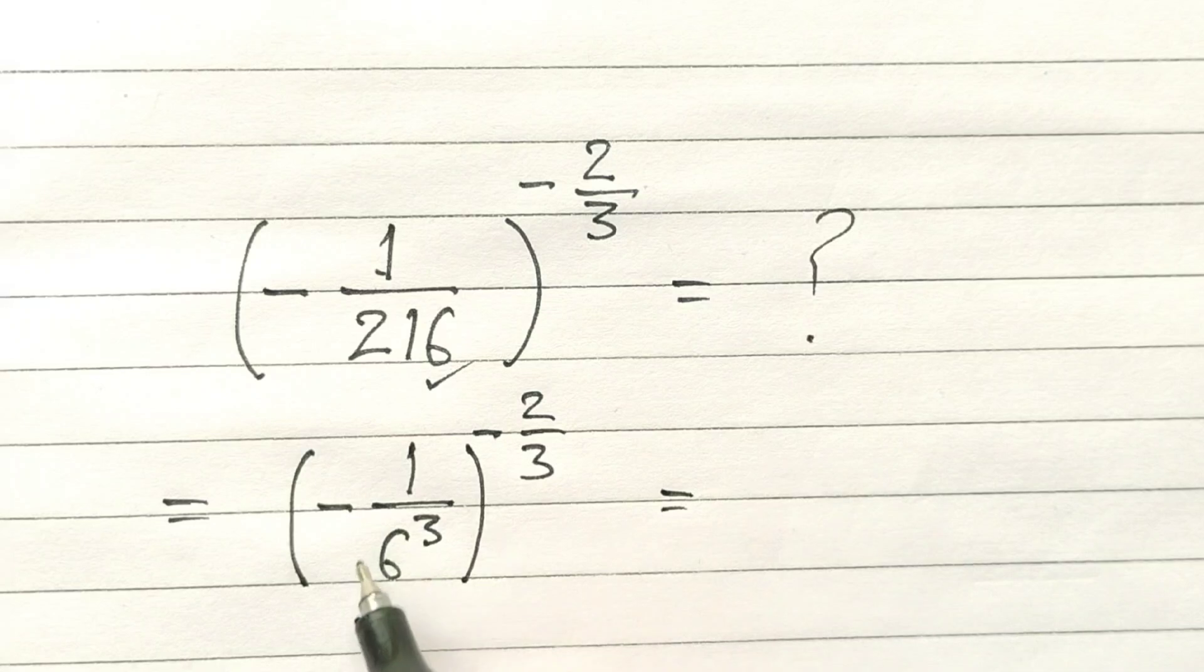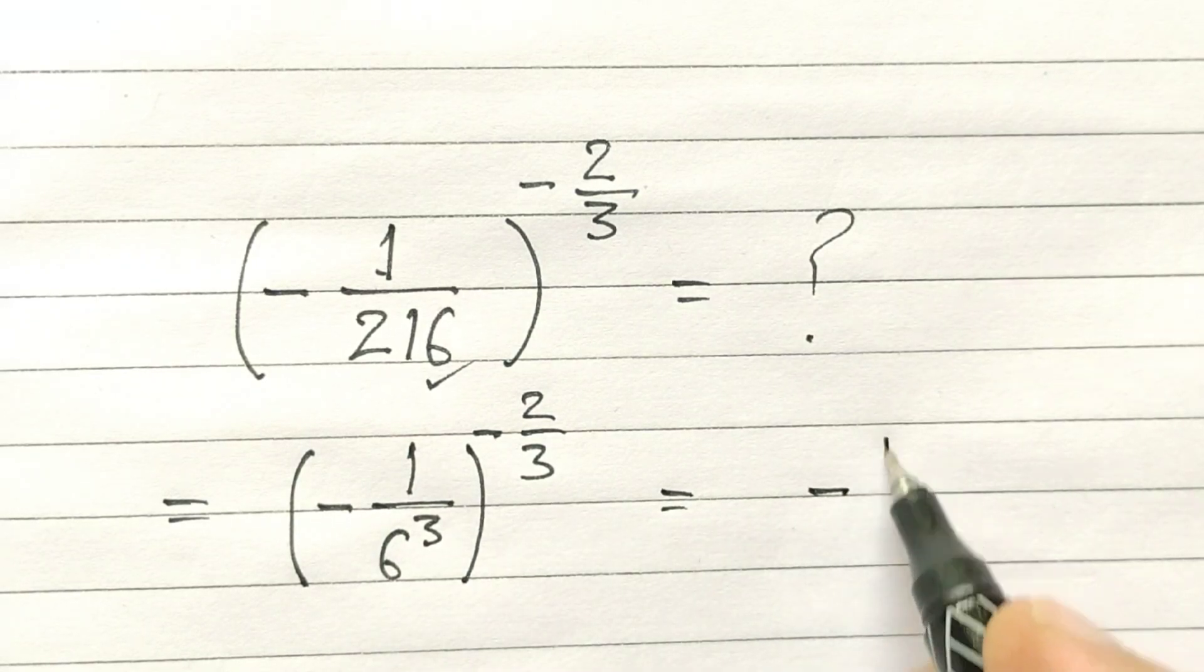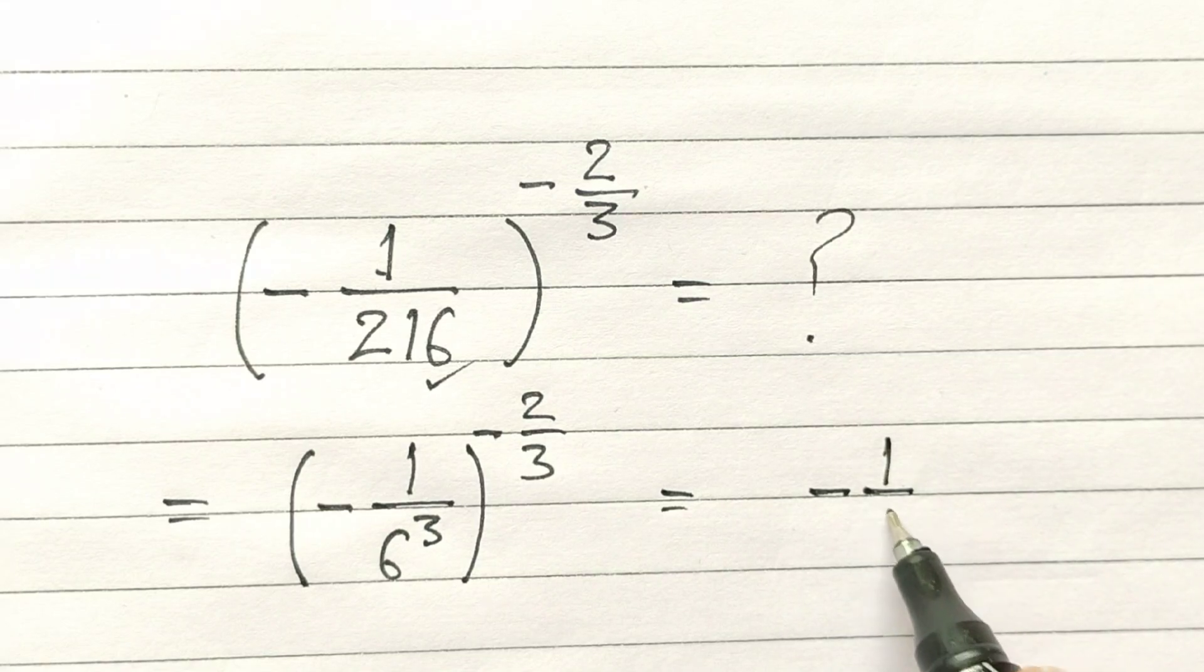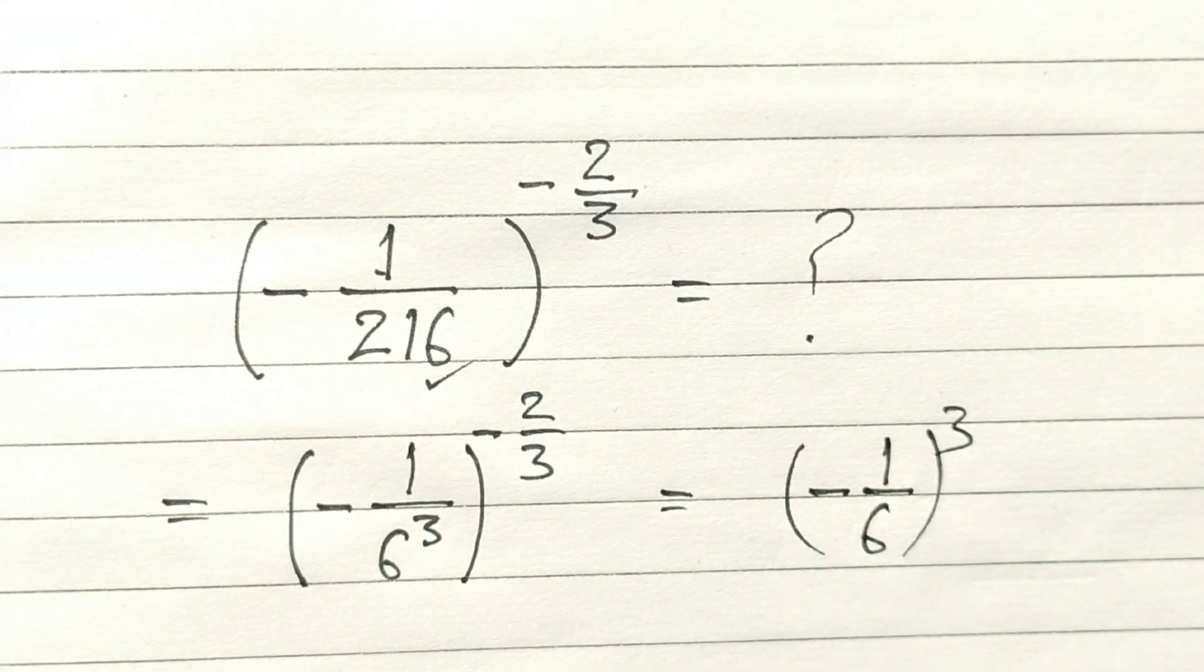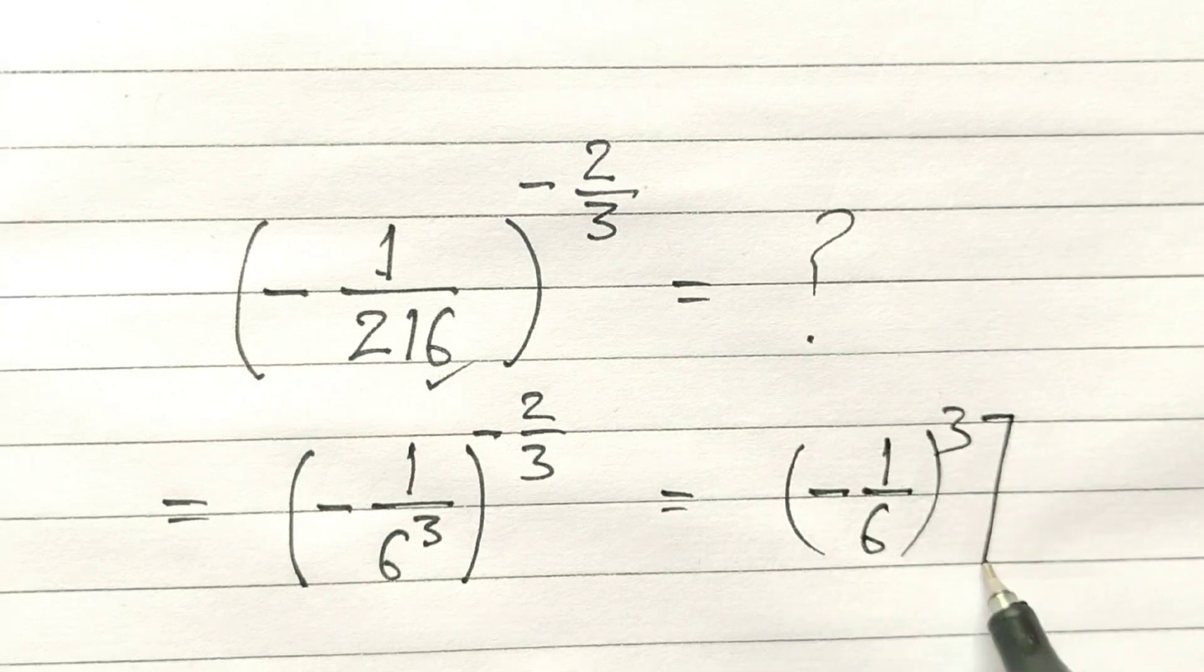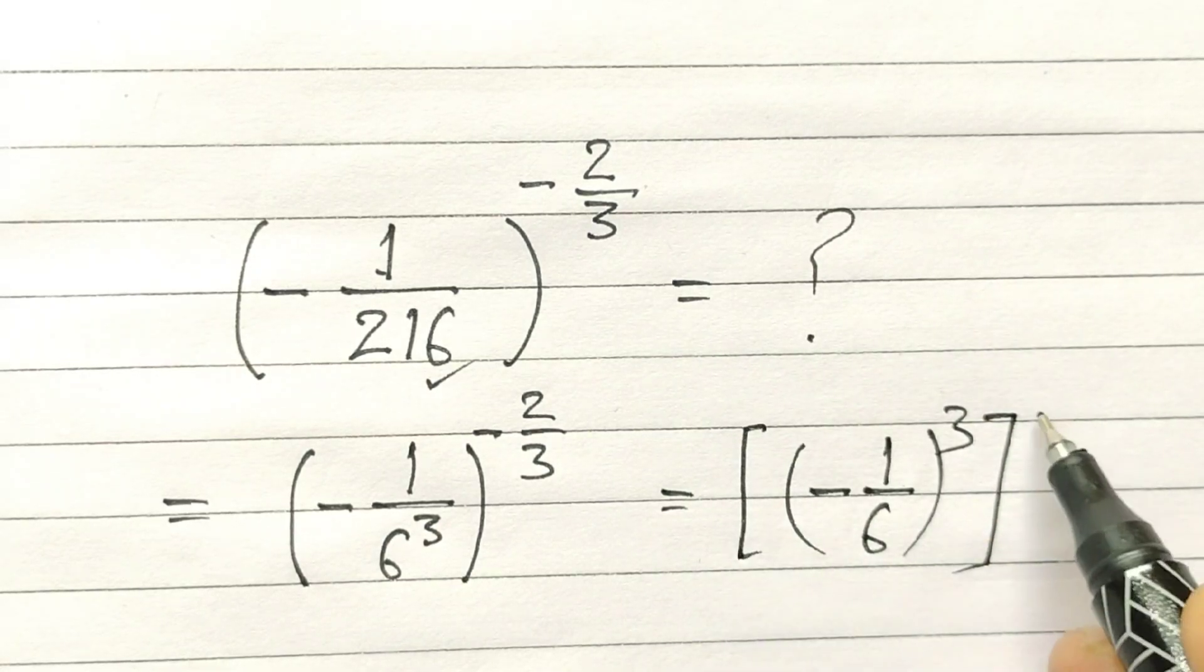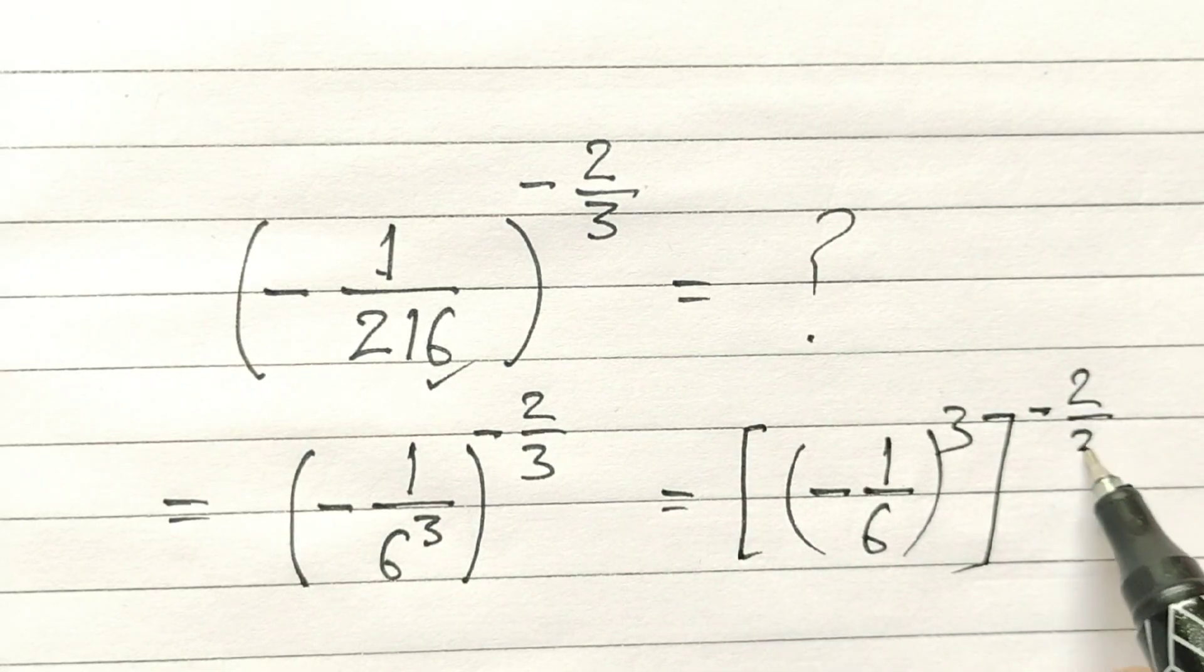Okay, this equals (-1/6^3)^(-2/3), which is the same as (-1/6)^3 raised to the power minus 2 by 3.